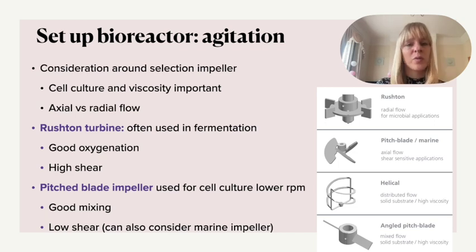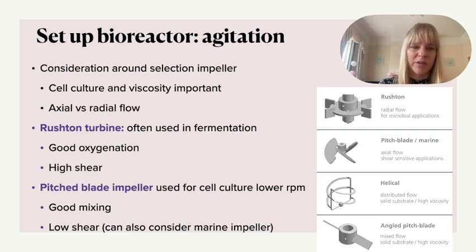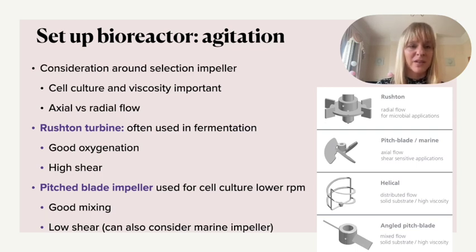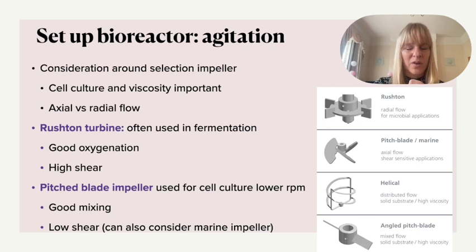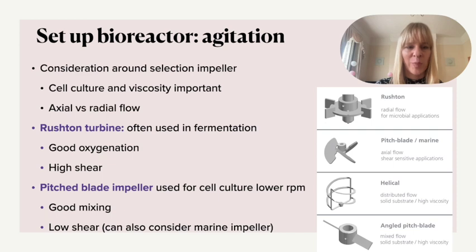The two most common impellers are the Rushton turbine, especially for fermentations and microbial applications, which generates very high shear and leads to very good oxygenation, and the pitched blade impeller, used at lower RPMs for cell culturing with much lower shear stresses. If only very little shear can be tolerated, people would move to a marine-type impeller, which has better mixing than a Rushton turbine and is therefore more often used for cell culturing.